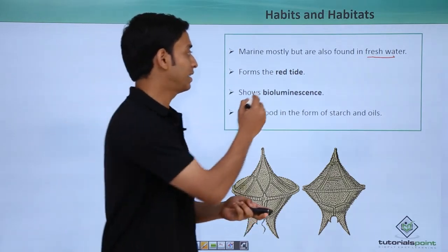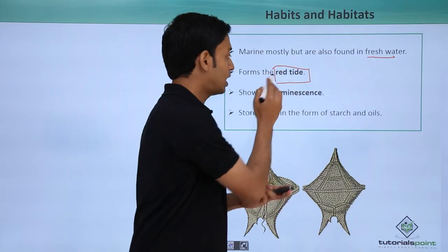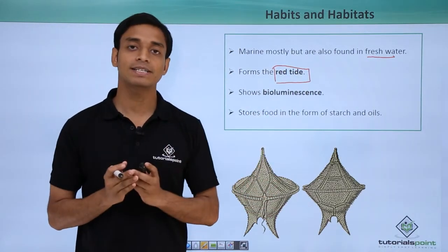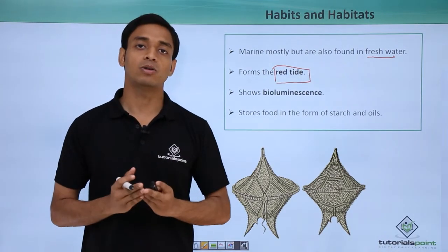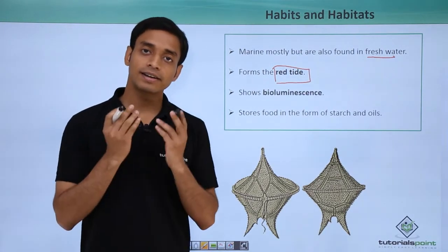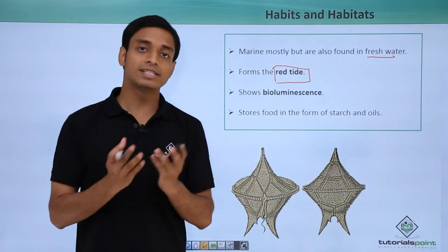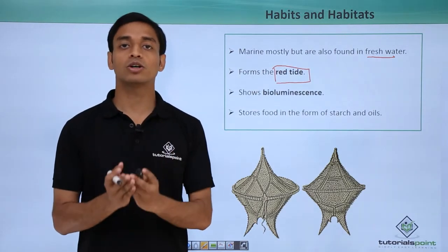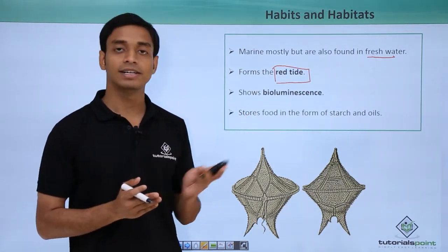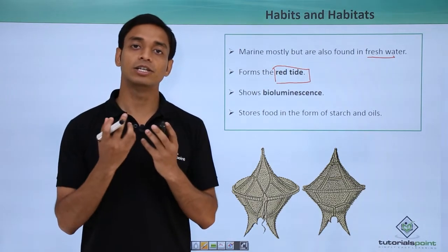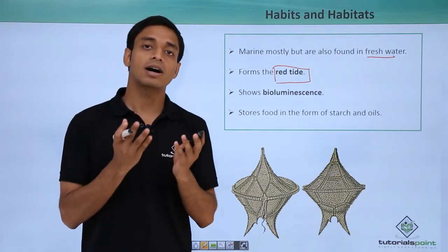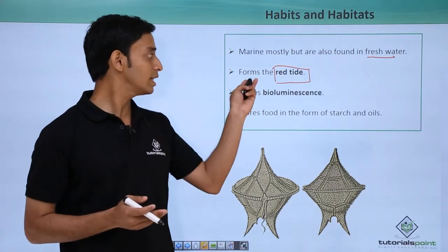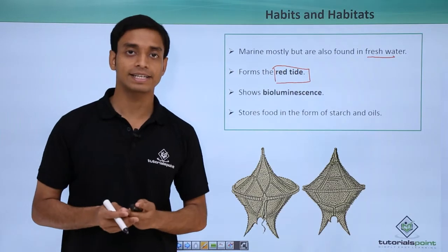They form the red tide, which is a very important terminology. A good example is the Red Sea. The Red Sea is known as the Red Sea because of the color of the water, which appears red due to the presence of red-colored dinoflagellates. This reddish appearance of the water is known as the formation of red tide.